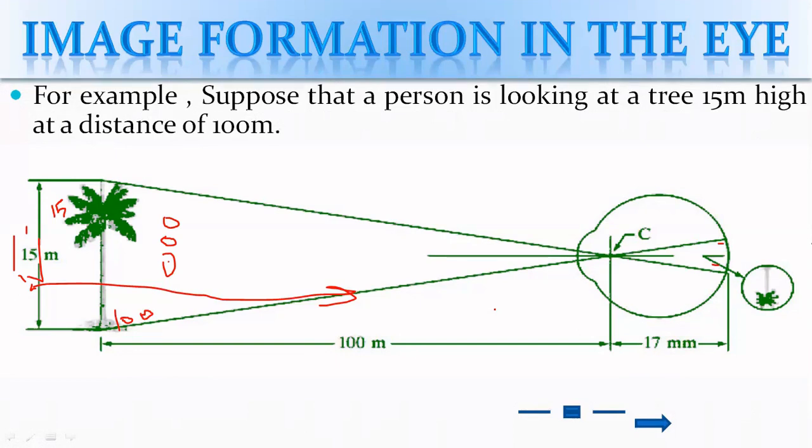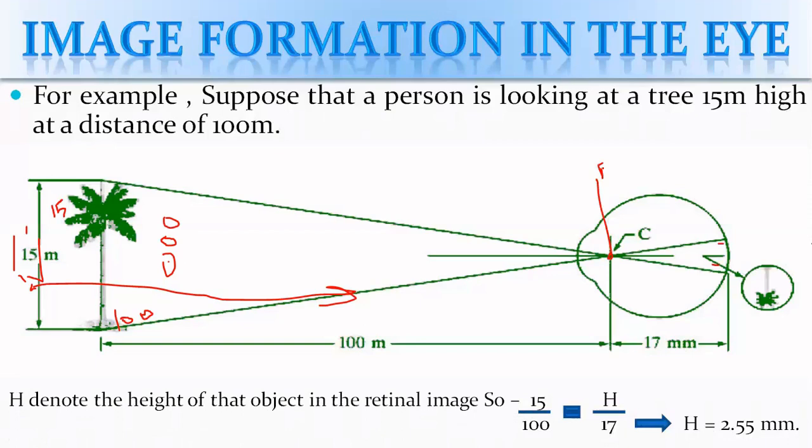This is the center of the object. This center is the focal point. The particular formula we use here relates the object height to the image height. The height of the object is 15 meters.